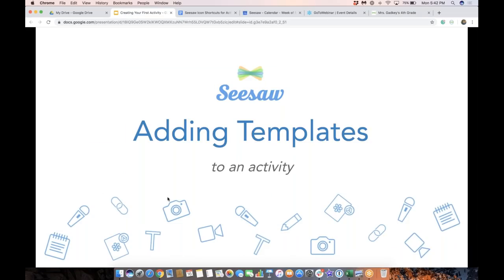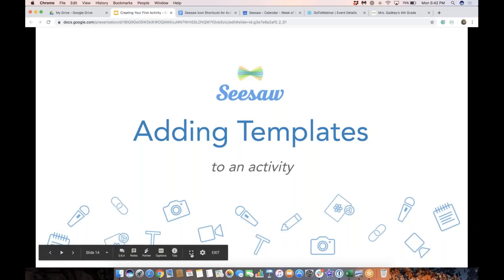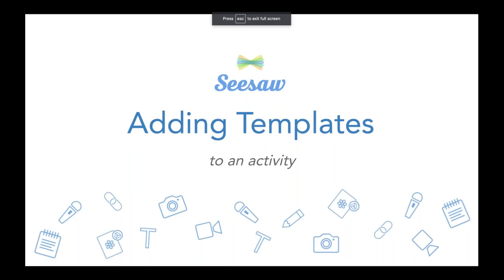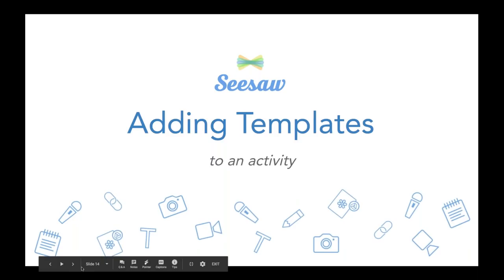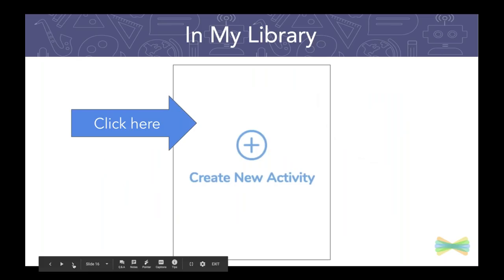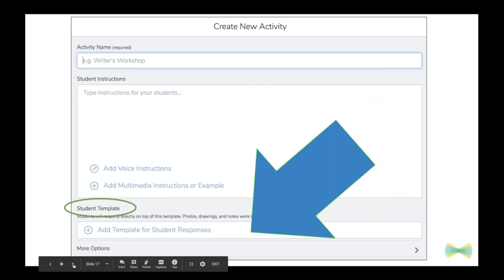So we have talked about creating our first activity. Now let's talk about adding a template to an activity. When you do that, you start the same way — tap the green add button, choose assign activity, and you'll see the option to create a new activity. This time we are going to add a student template. There are tons of choices for templates, and my go-to ones for creating a template would be photo, drawing, or upload.